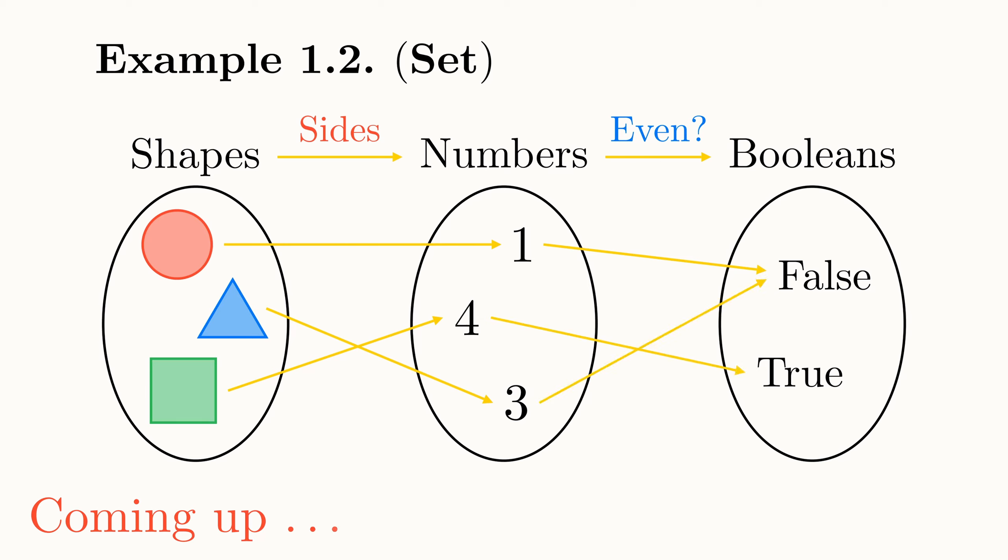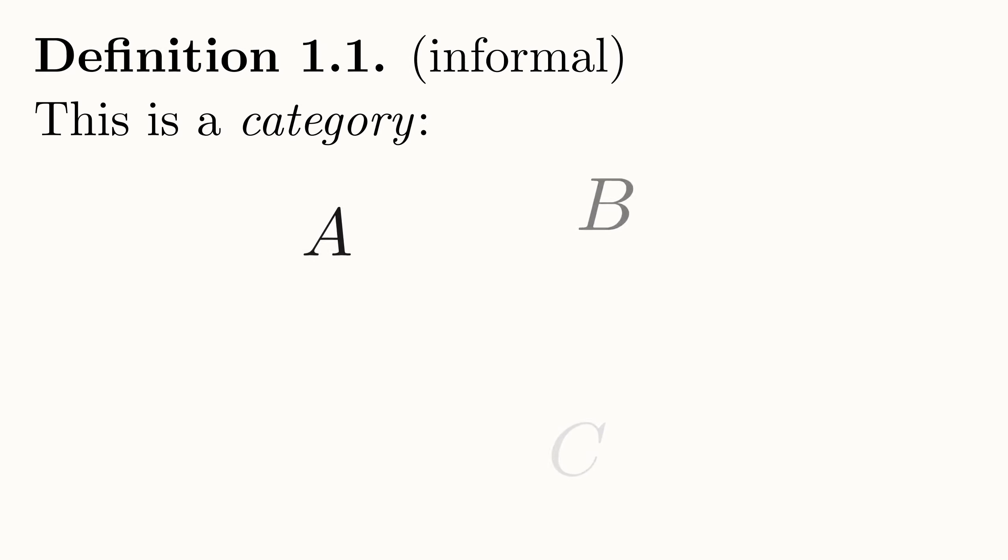This may sound daunting, but if we use the intuition we've already established, it shouldn't be too difficult at all. We currently understand a category as some objects with various arrows between them that satisfy rules concerning composition, associativity, and identity. Let's turn this into a formal definition and explain some terminology along the way.